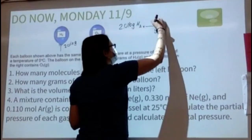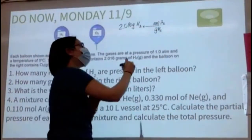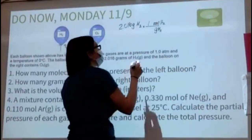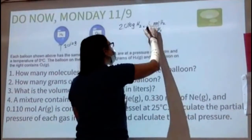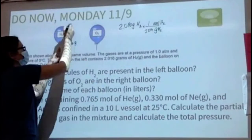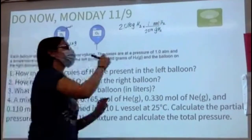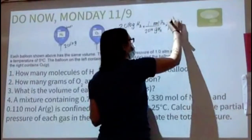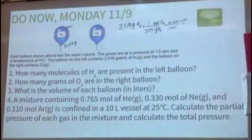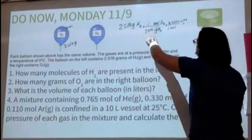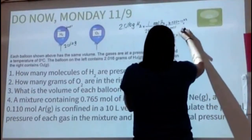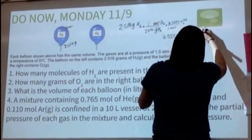Going from grams of H2 to moles of H2: one mole of H2 is 2.016 grams, so there's one mole of hydrogen gas in the balloon. Then multiply by Avogadro's number — 6.022 × 10²³ — to get 6.022 × 10²³ molecules of H2.